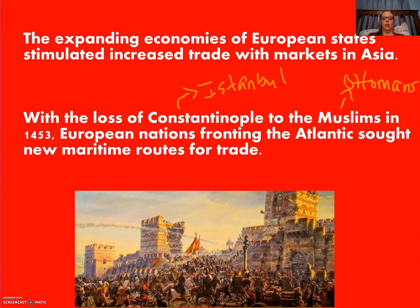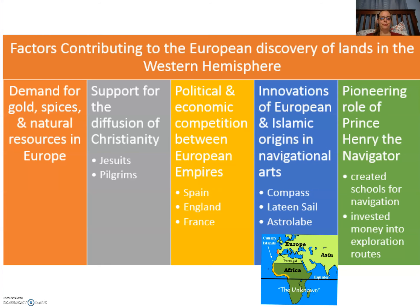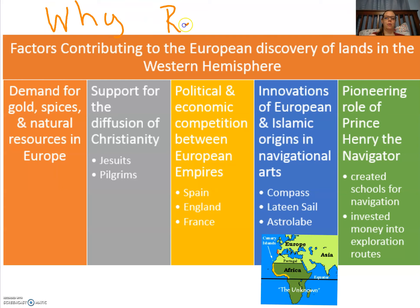The European powers, despite the fact that the Ottoman Empire was very inclusive, open, and diverse, didn't want to trade through this Muslim outpost. So they were looking for a maritime route — maritime meaning sea. They're going to look for ways to sail to Asia. There was a theory that you could leave and go across the Atlantic Ocean and end up in Asia. That's their ultimate goal. So this chart is really just asking: why did the Europeans go to discover new land in the Western Hemisphere?